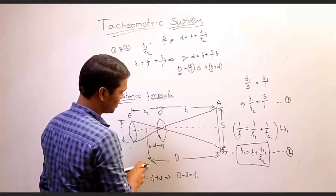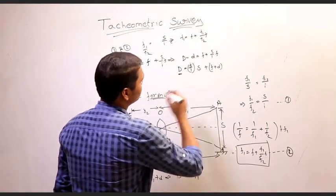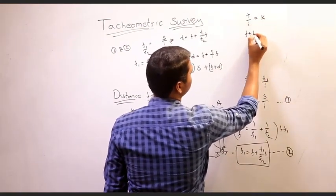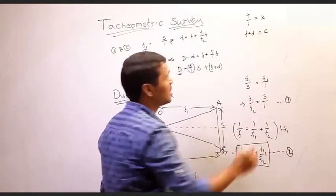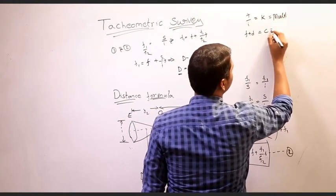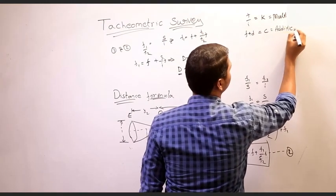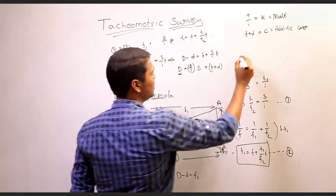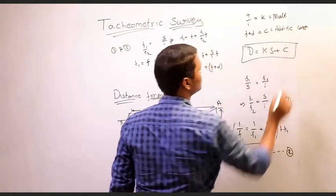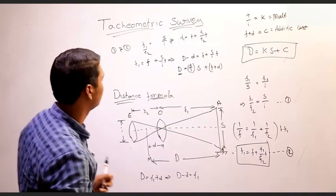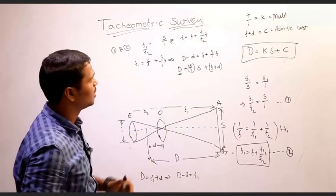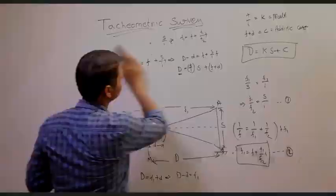So the final distance between the station and the staff is D equals (F/I)·S + (F + d). Here F by I is called the multiplying constant K, and F plus d is called the additive constant C. Therefore the final formula is D equals K·S plus C. This is the basic formula used in every tachymetric survey. We will next see how to use this formula for deriving all elevations and distances.